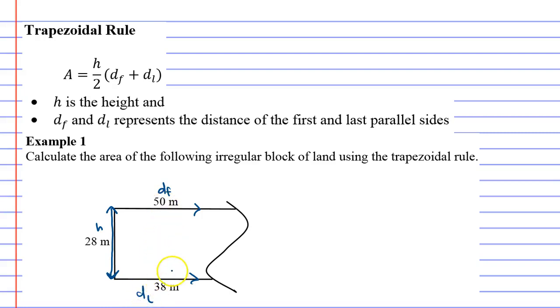Let's solve this one. Area equals h over 2 times the distance of the first side plus the distance of the last side.